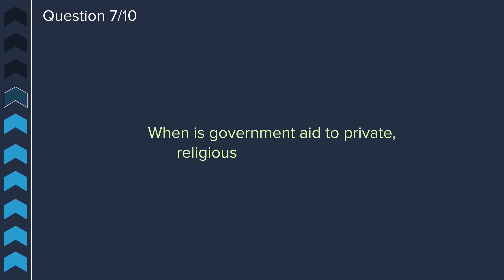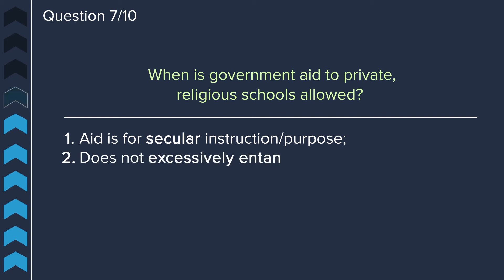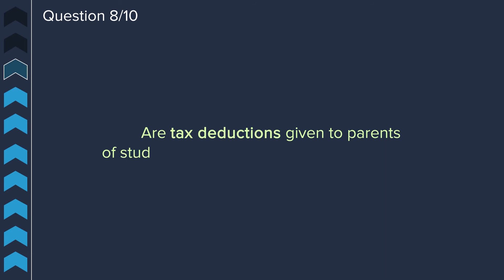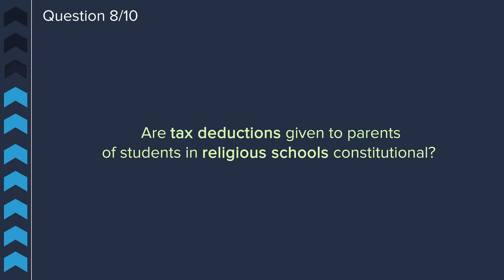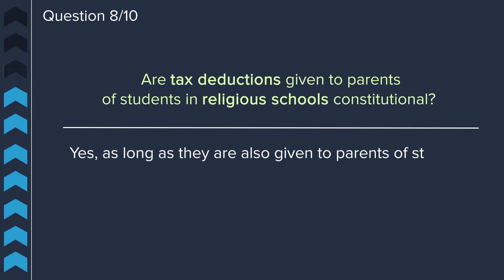Question seven: when is government aid to private religious schools allowed? Government aid to private religious schools is allowed if the aid is for secular instruction or purposes, and it does not excessively entangle the government — in other words, it doesn't require the government to oversee programming or any type of funding disbursement. Question eight: are tax deductions given to parents of students in religious schools constitutional? Yes, as long as they are also given to students in secular schools.